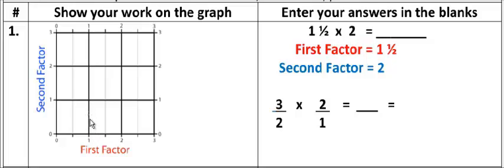Let's just draw a line at 1 and 1 half. So I've got 0, I've got 1 half, 1, 1 and 1 half, and 2. So I'm looking at 1 and 1 half. I'm going to draw a line right here and just go straight up. There's my 1 and 1 half. That's my 1 and 1 half line.